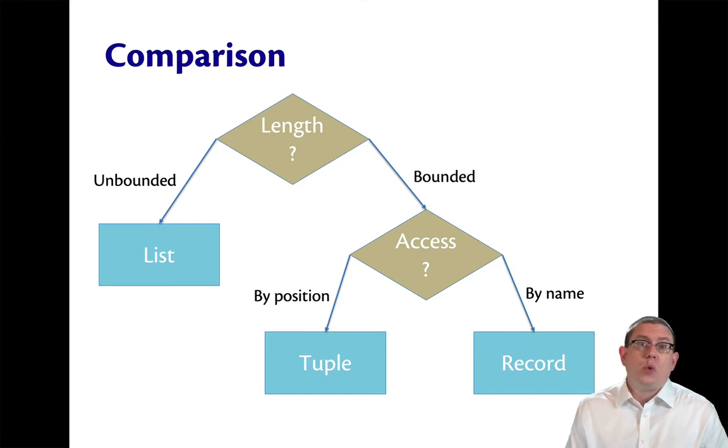By position means, do you want just the first component or the second component of a tuple? For points, that made sense. We usually think of a point as being ordered by position. There's an x-coordinate and then a y-coordinate, maybe a z-coordinate.